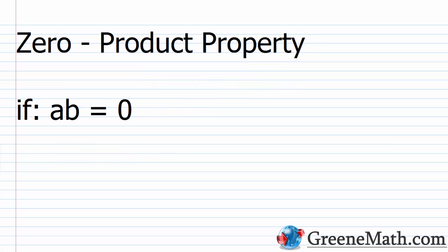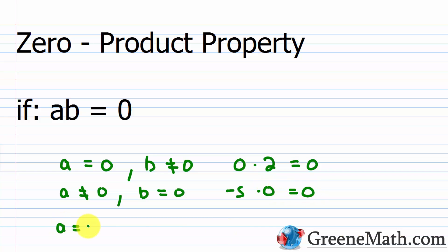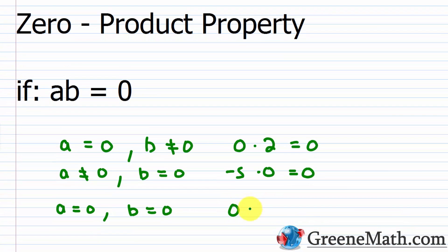In order to solve a quadratic equation by factoring, we have to understand something known as the zero product property, also known as the zero factor property. This tells us that if two real numbers are multiplied together and the result is zero — so something like a times b equals zero — then essentially one of the following possibilities has to be true: a is equal to zero and b does not equal zero; or a is not equal to zero and b is zero; or both a and b could equal zero. Zero times anything is zero. This is the math behind what we're going to do today, and we're going to look at it in a more complex form.